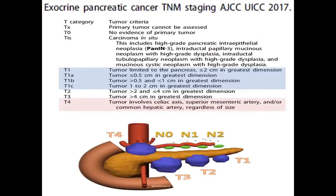According to T as a tumor, it's either carcinoma in situ or T1, which is less than two centimeters. T1 is subdivided into T1a, equal to or less than half a centimeter; T1b, from half to one centimeter; and T1c, from one to two centimeters. T2 is from two to four centimeters in the greatest dimension, and T3 is more than four centimeters.